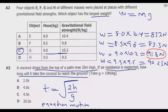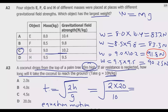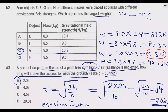Substituting the values — h is 20 metres and g is 10 N/kg — we get the square root of (2 times 20 divided by 10), which is the square root of 40 divided by 10, equal to the square root of 4. The square root of 4 is 2, so the answer is 2.0 seconds.